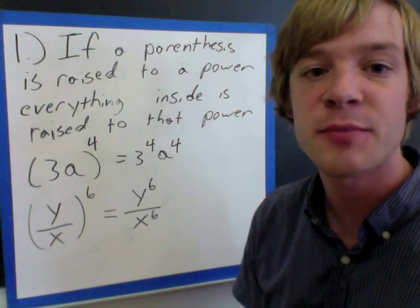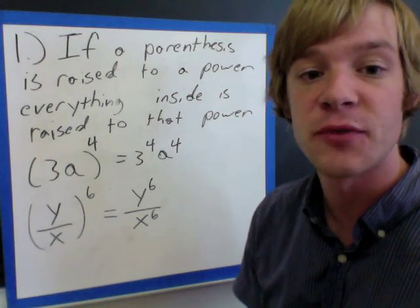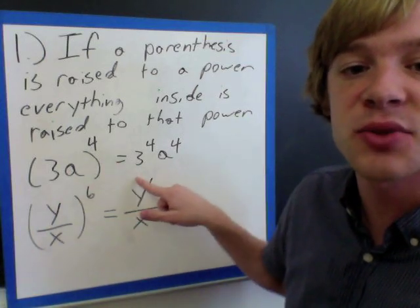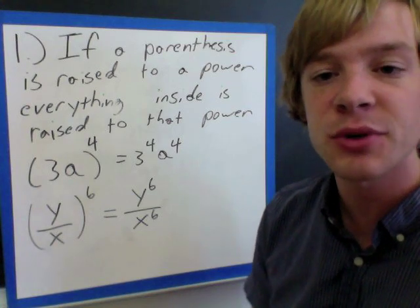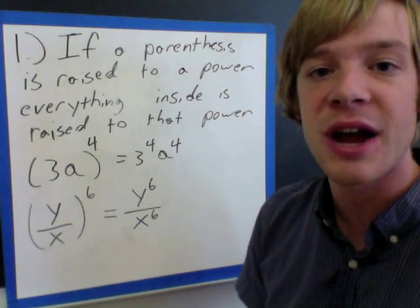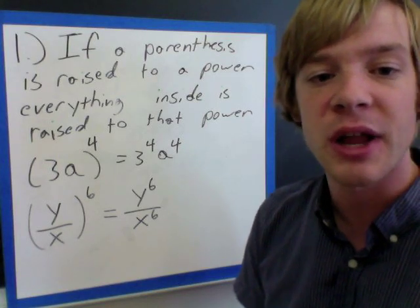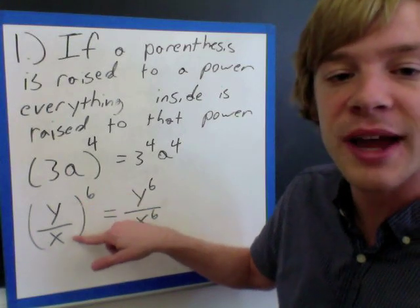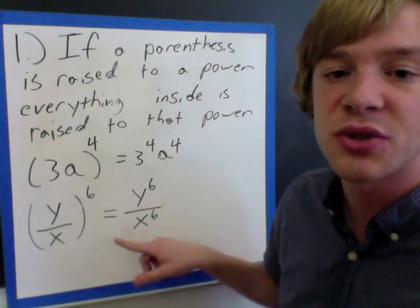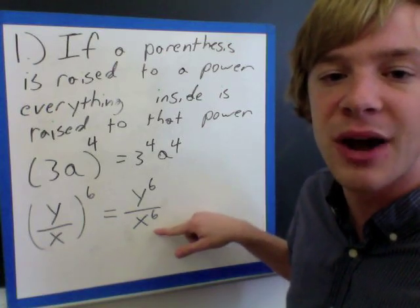Our first rule says that if we have a parentheses raised to a power, everything inside is raised to that same power. For instance, here I have 3a to the 4th power, so this is the same thing as 3 to the 4th power and a to the 4th power. This is very similar to our distribution rules. This same rule can be applied whenever we have fractions — y over x to the 6th power is the same thing as y to the 6th over x to the 6th.